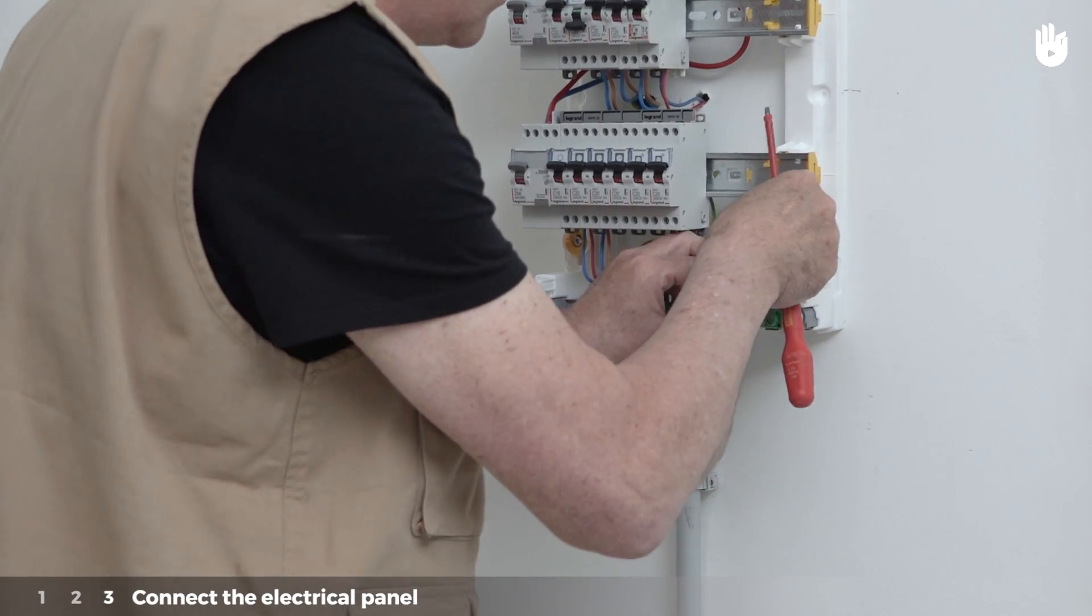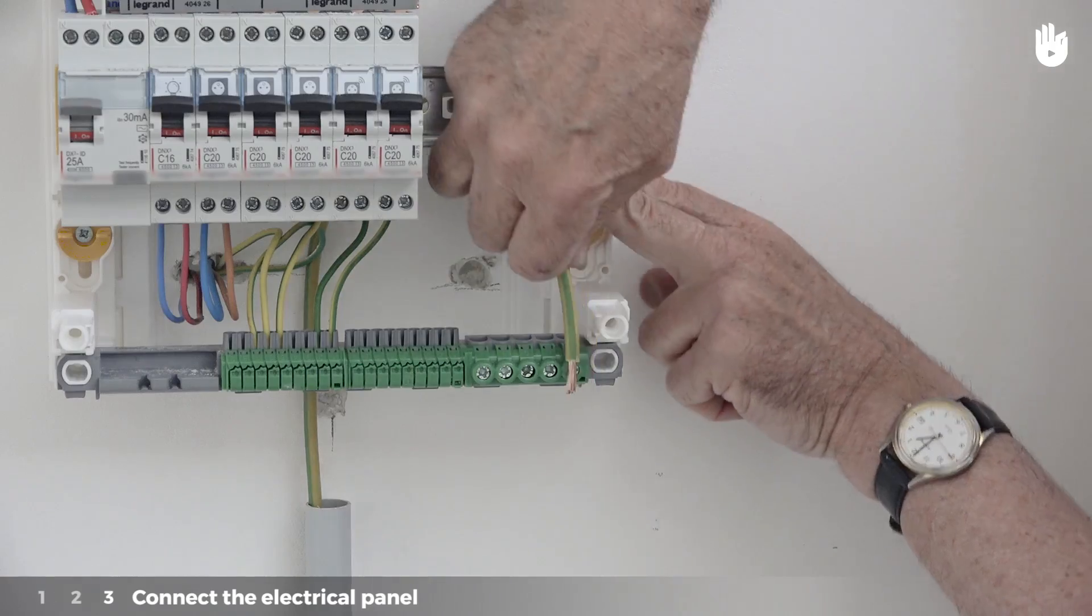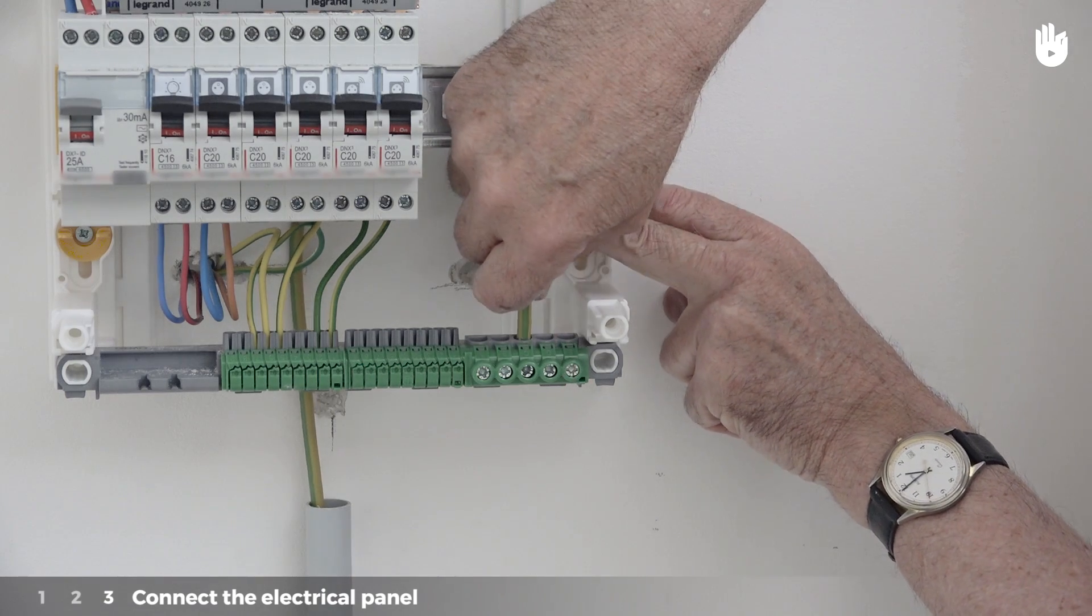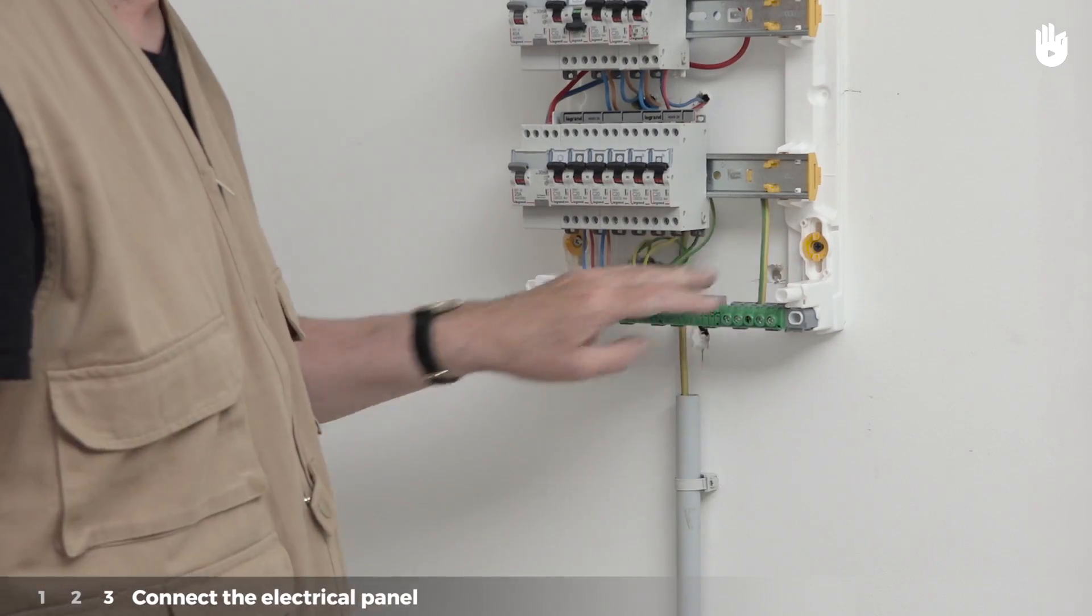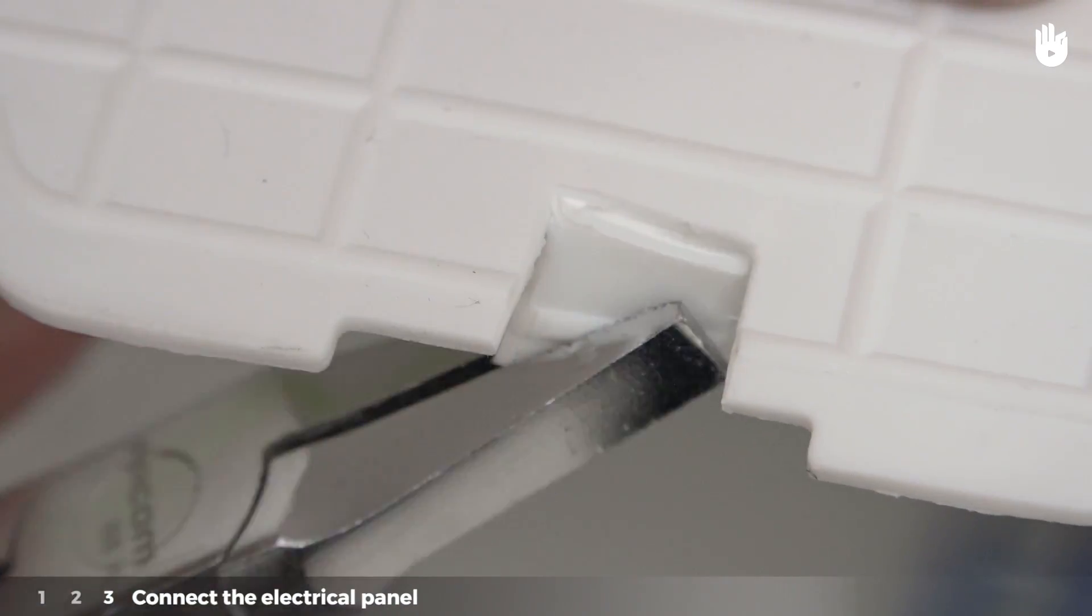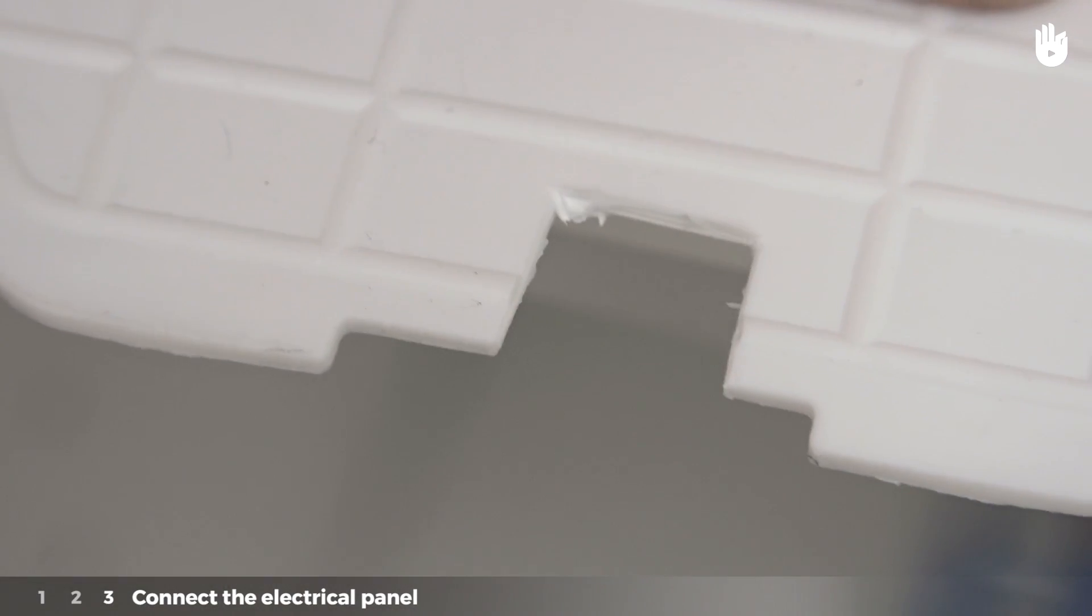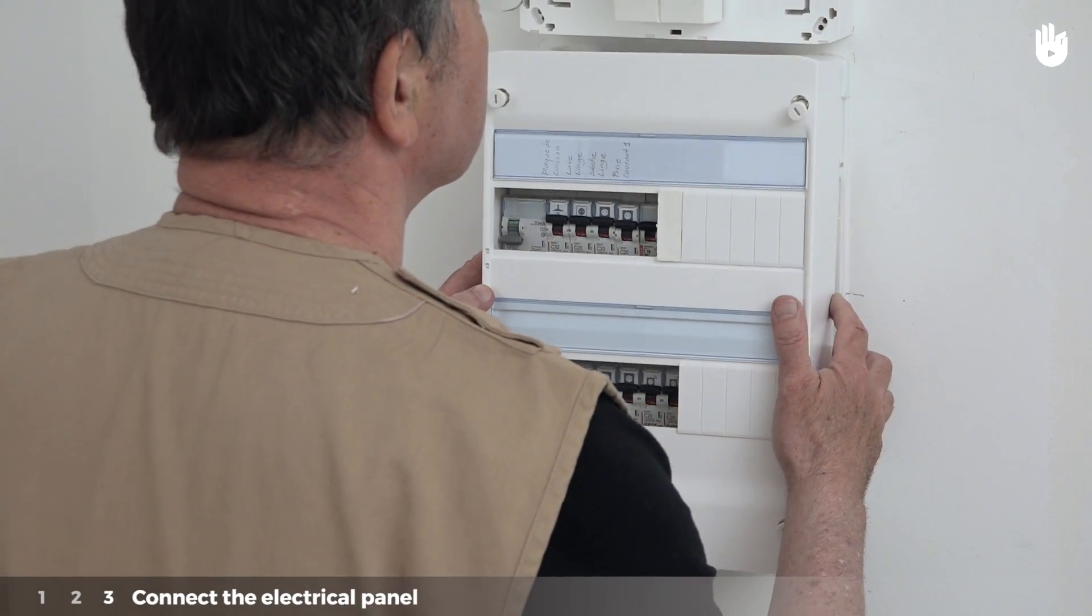To connect the green ground strip at the bottom of the panel, insert the stripped ground wire into the terminal and screw it in. Cut a space out at the bottom of the panel to allow the ground conductor to pass through. Put the cover of the electrical panel back on.